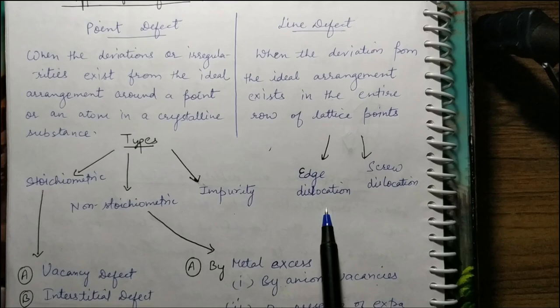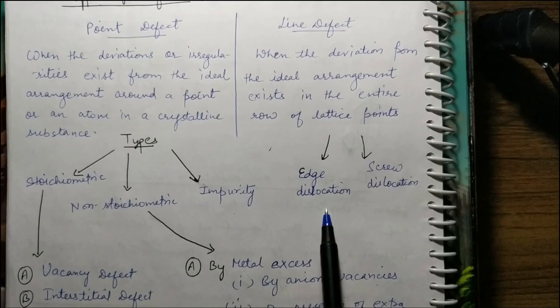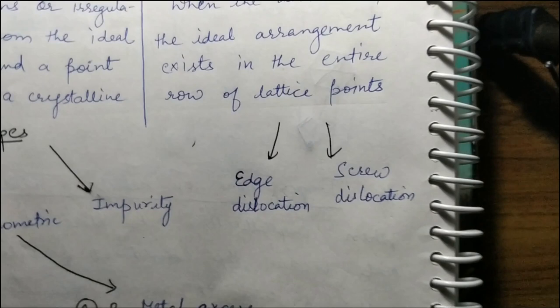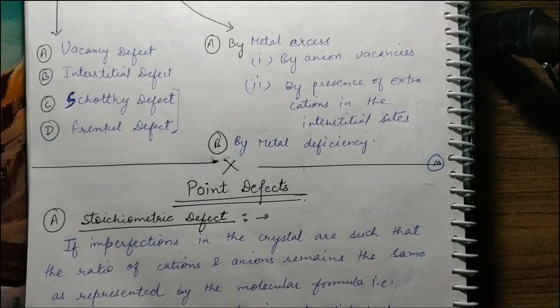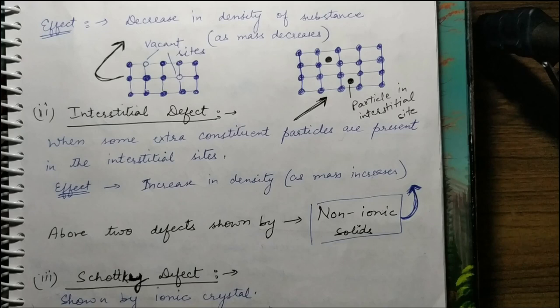We then studied types of defects: point defect and line defect. If the deviation or irregularity is at one particular point, it is a point defect; if it is along an entire row, it is a line defect. Further types under point defect: stoichiometric, non-stoichiometric, and impurity defects. Under line defects: edge dislocation and screw dislocation. Under stoichiometric point defects, we studied four types: vacancy defect, interstitial defect, Schottky defect, and Frenkel defect.